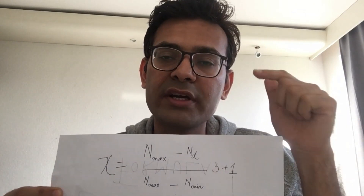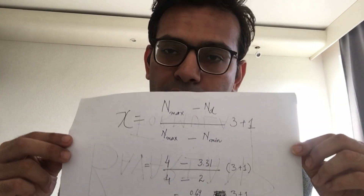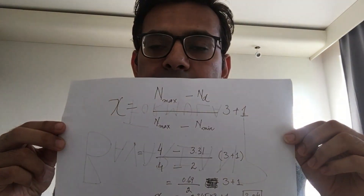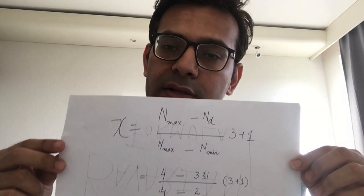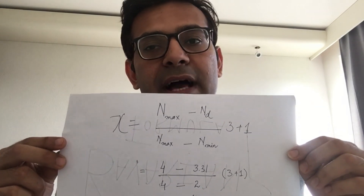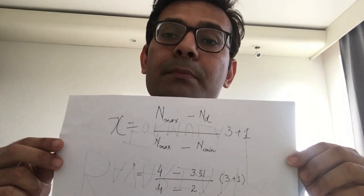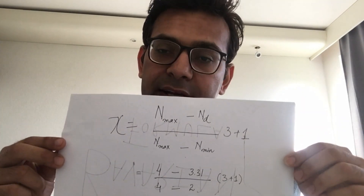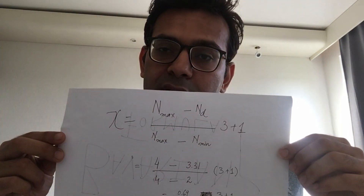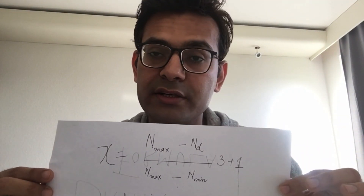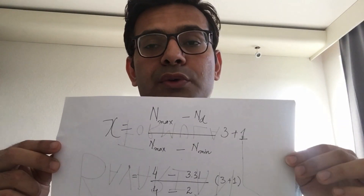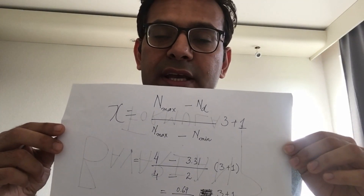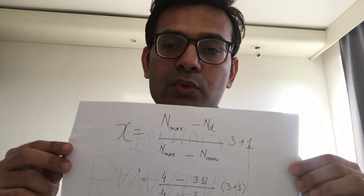For example, if the maximum grade is 4, you subtract your obtained grade — suppose 3.31 — from 4, giving (4 minus 3.31). You divide this by (4 minus 2), where 2 is the minimum grade. This is then multiplied by 3, plus 1. Remember, the bracket around 3 plus 1 means you do not simply add it first.